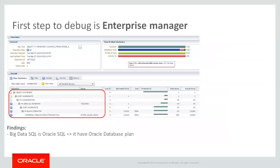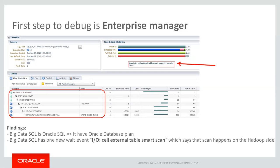For example, if you have a performance problem, it could even be on the Oracle database side. So if you write a complex query, the real problem could be on the Oracle database side. The big data SQL plan is an Oracle plan — you just work against an external table. On the query plan, you can find on the last row 'external table access storage full,' which means that you ran a smart scan over the external table. The second thing you can find is that we introduced a new wait event: 'cell external table smart scan.' This event says that the scan is happening on the Hadoop side.